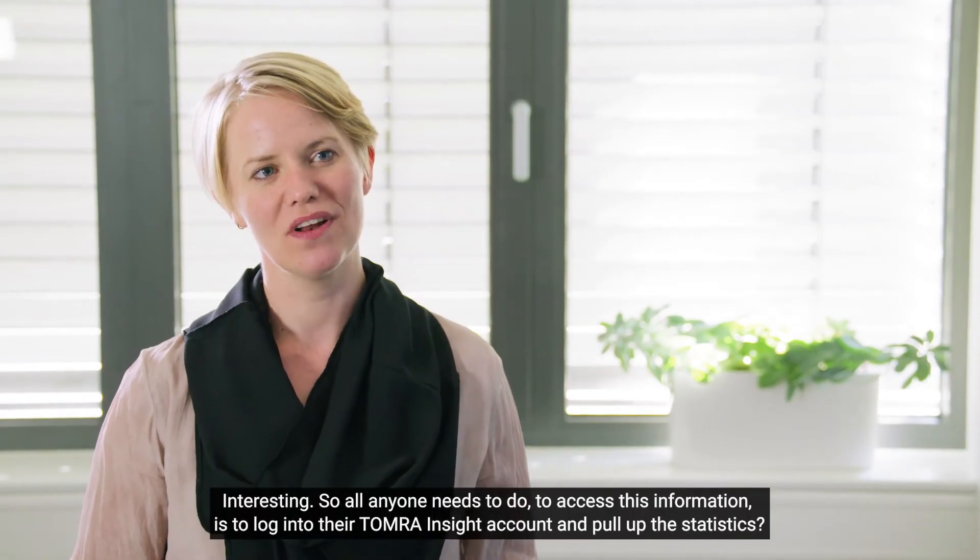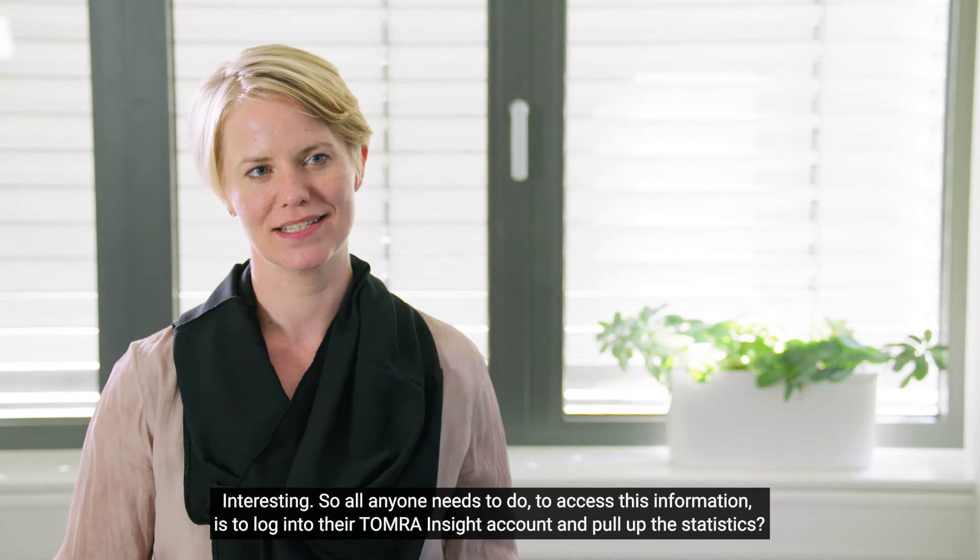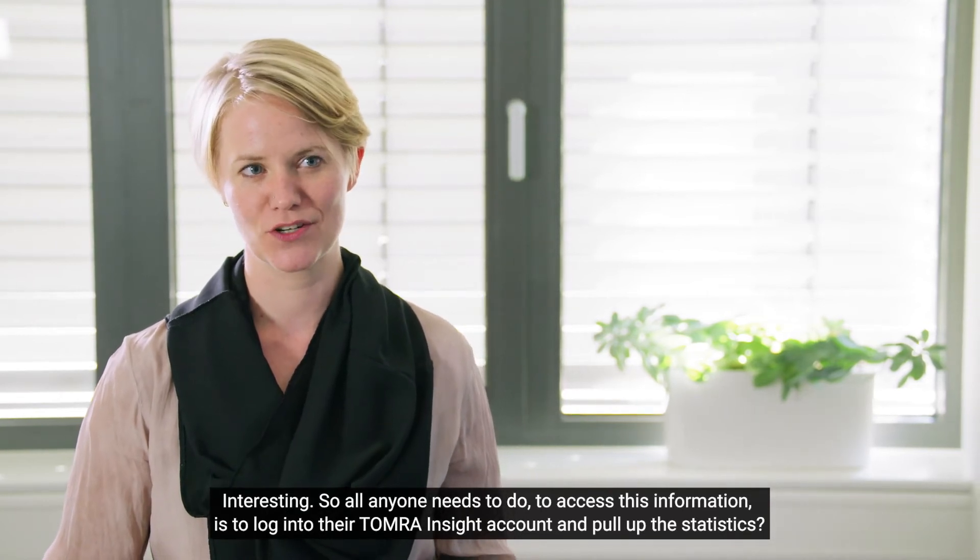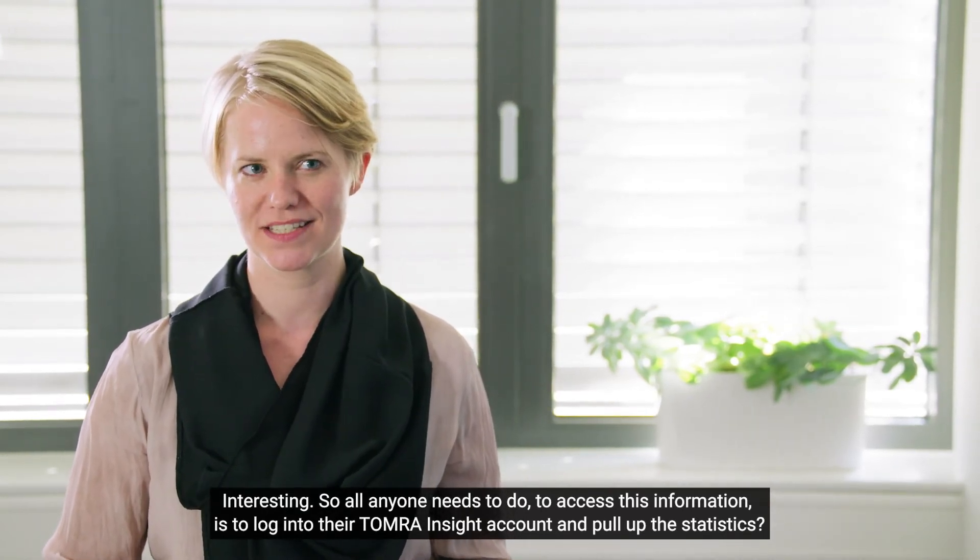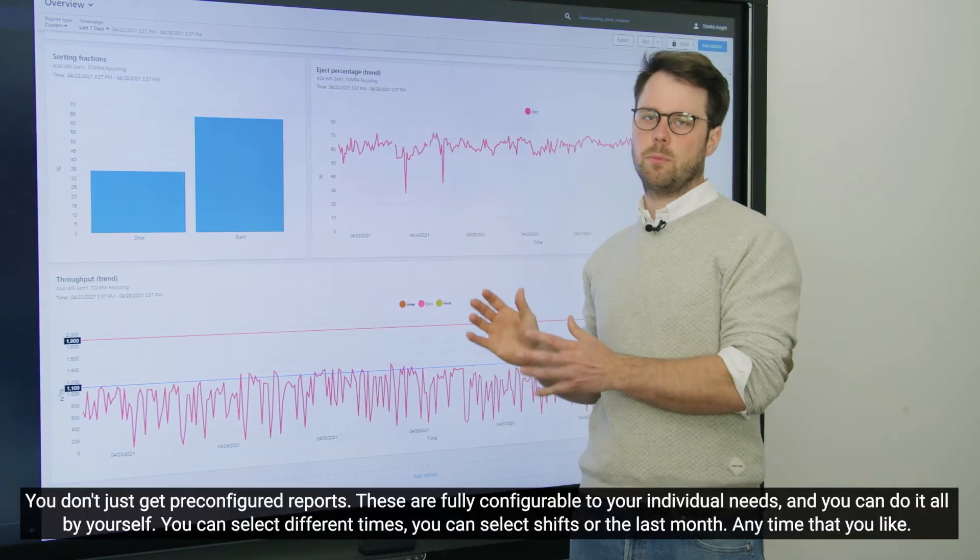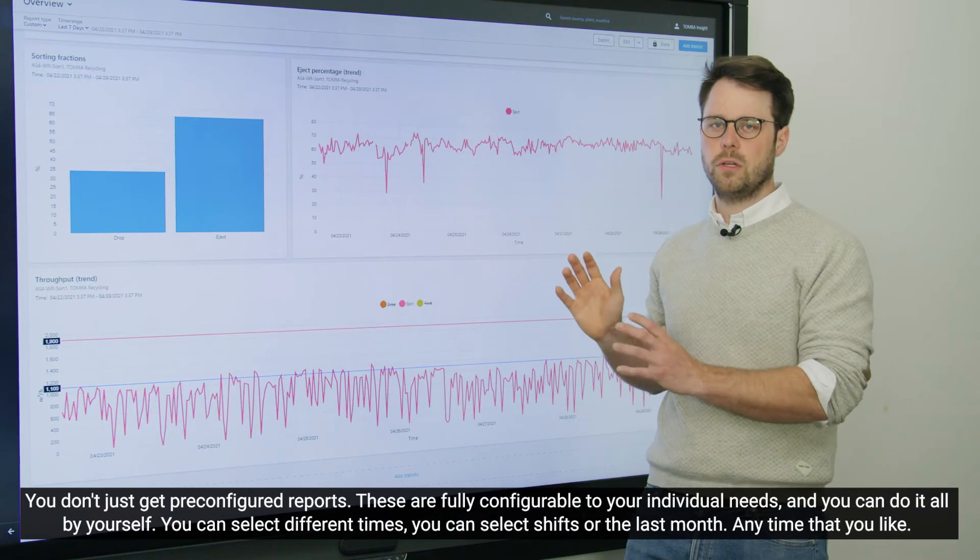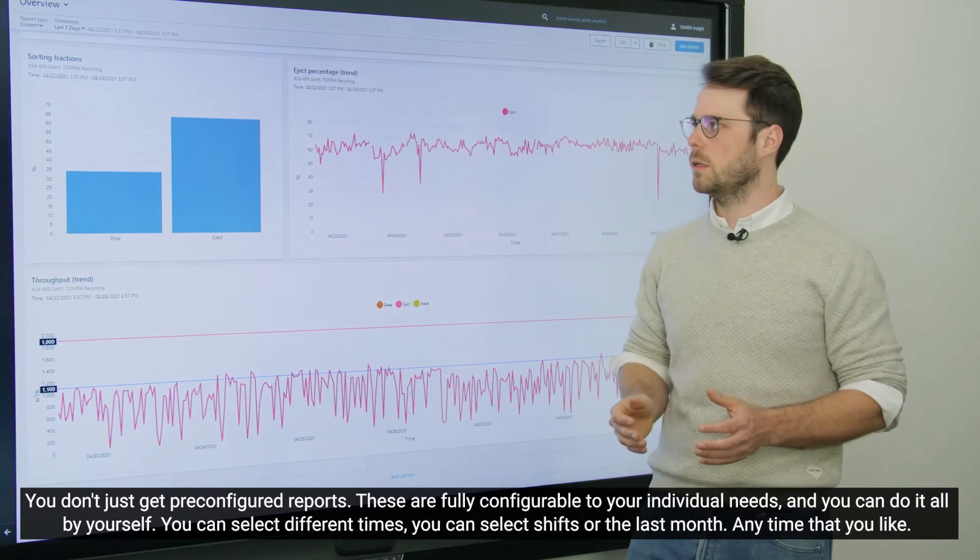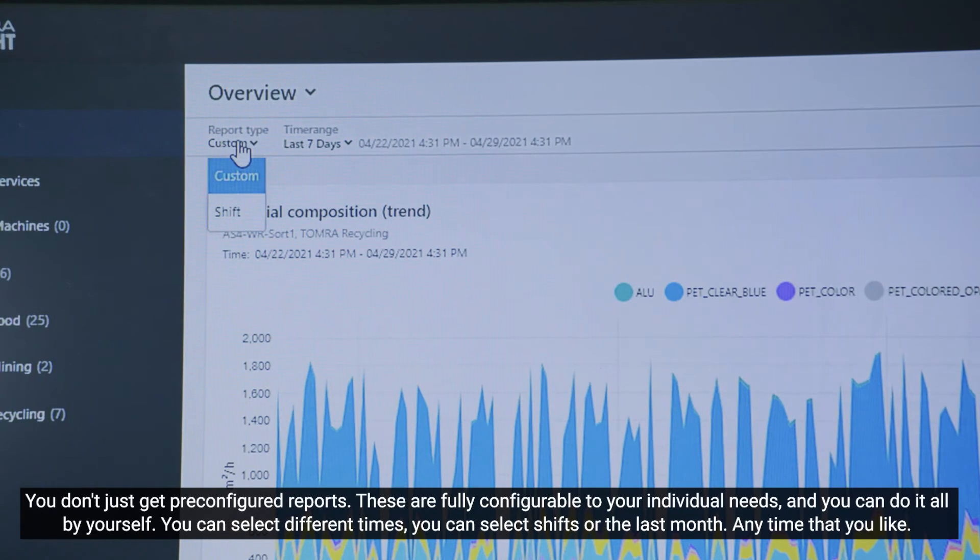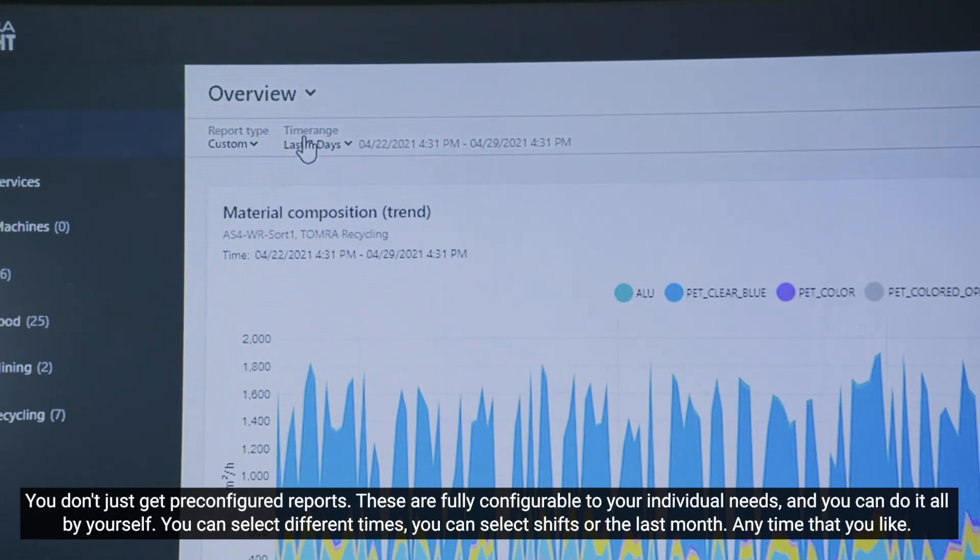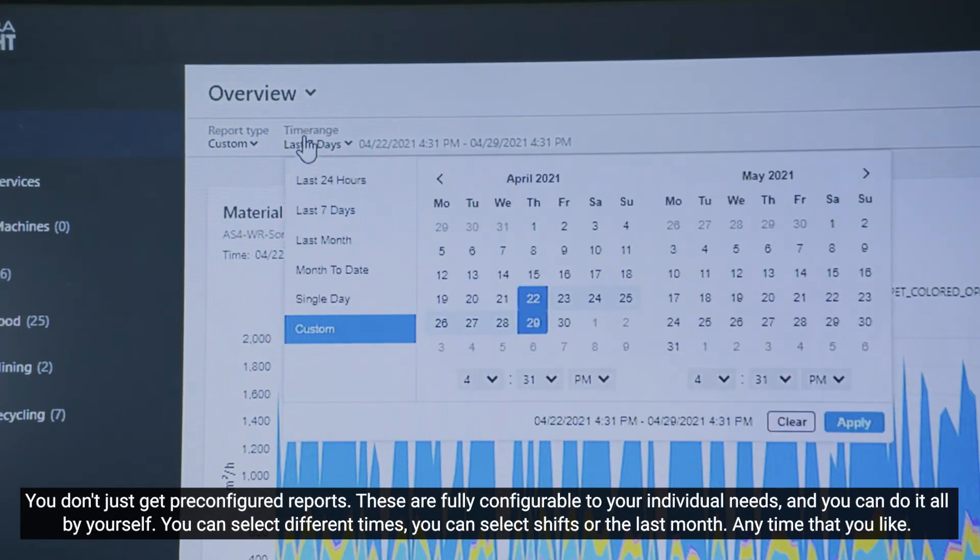Interesting. So all anyone needs to do to access this information is to log into their TOMRA Insight account and pull up the statistics. You don't just get pre-configured reports. These are fully configurable to your individual needs. And you can do it all by yourself. You can select different times, shifts, or the last month—any time that you like.